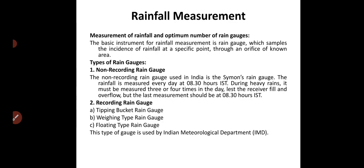The unit of measurement for rainfall is mm or centimeter — mm per day, mm per hour, or centimeter per day. This is the measure that we use for rainfall.